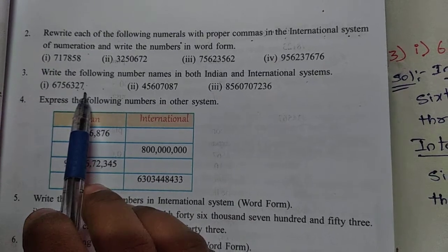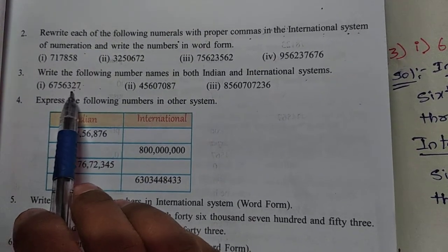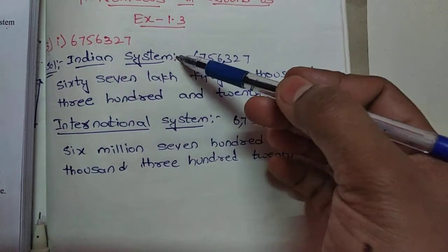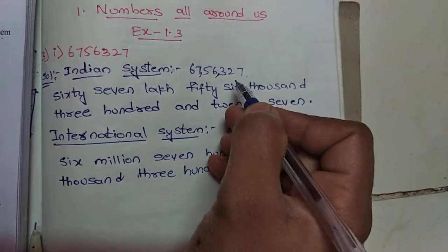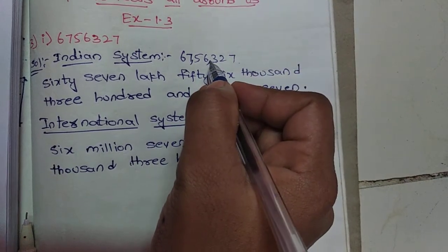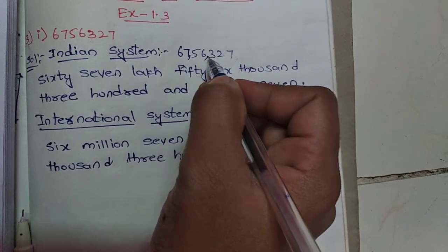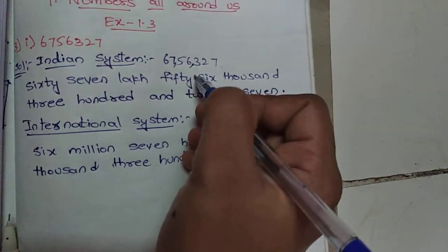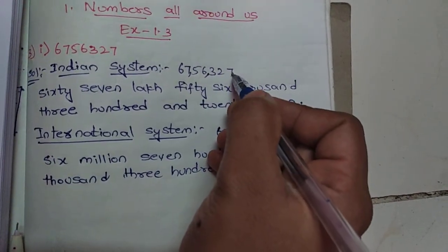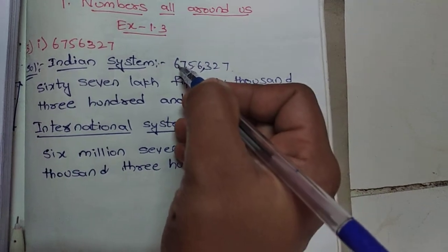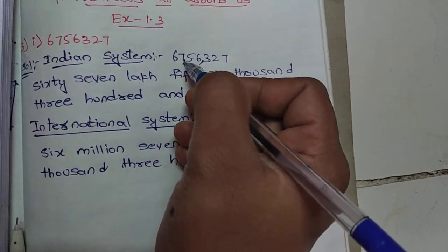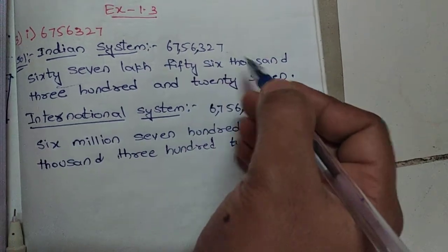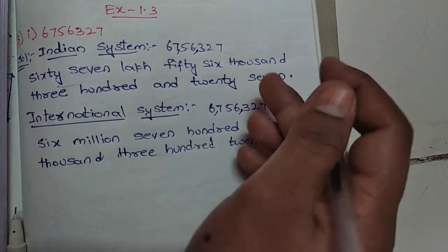The first number is 6,756,327. In the Indian system, we separate with commas — from the right side, three places first, then two digits, then two digits. So the place values are: units, tens, hundreds, thousands, ten thousands, lakhs, ten lakhs. The word form is: sixty-seven lakh, fifty-six thousand, three hundred and twenty-seven.